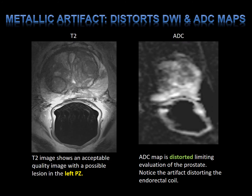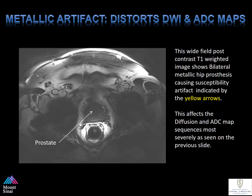Metallic artifacts can distort diffusion-weighted imaging and its subsequent ADC maps. The T2 image is of acceptable quality, and there's a left peripheral zone low-signal lesion seen here. However, when looking at the ADC map, notice how it has been distorted — this is your first clue that there's metallic artifacts or a hip replacement possibly distorting the ADC maps. This is a wide-field post-contrast T1-weighted image showing bilateral hip prostheses causing susceptibility artifact indicated by the yellow arrows, affecting the diffusion and ADC map sequences most severely.